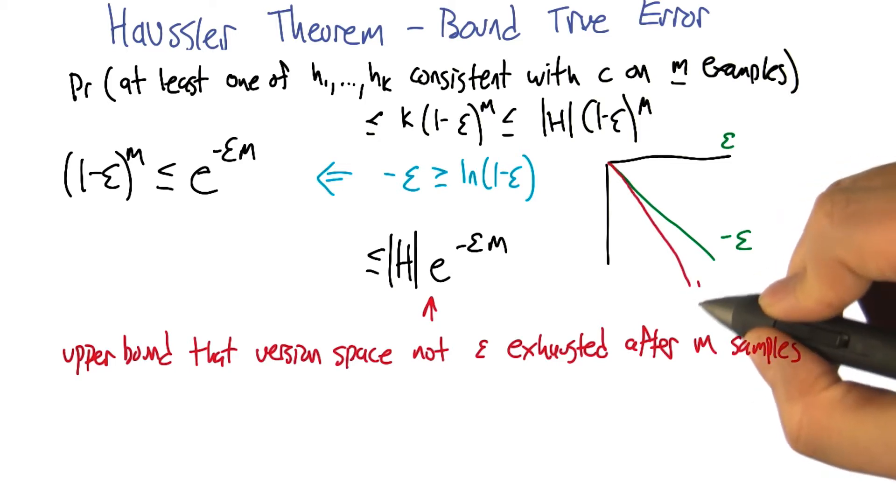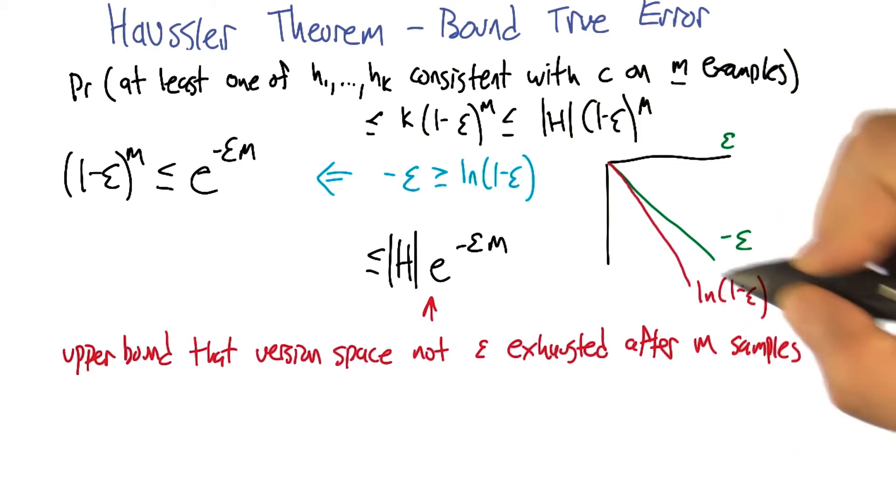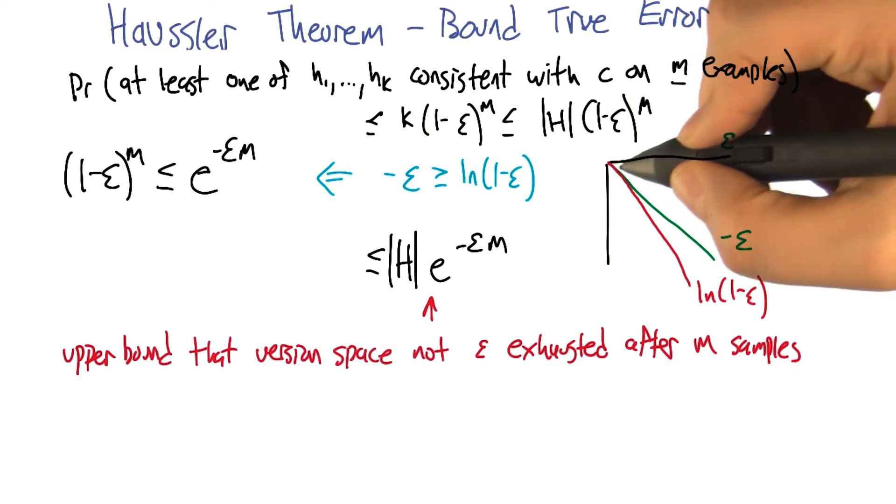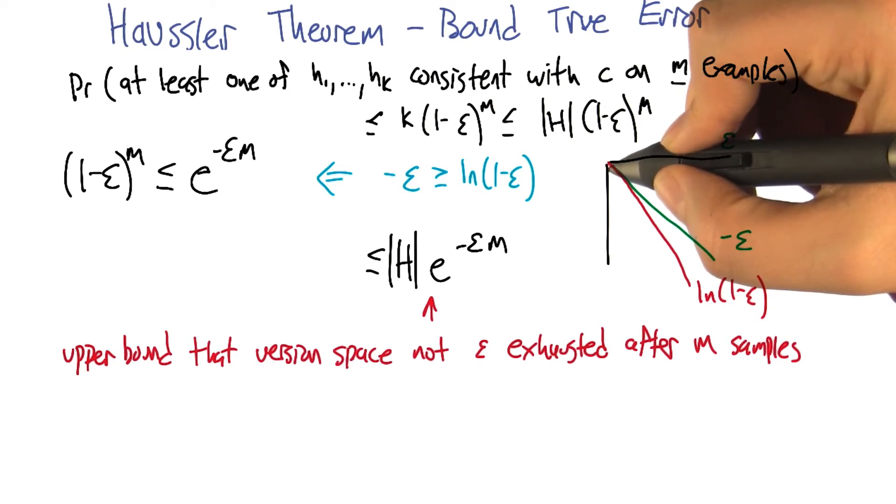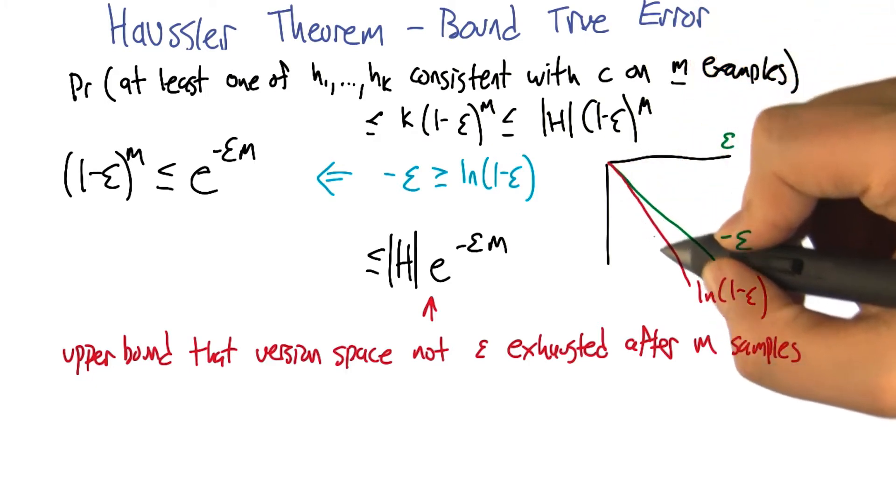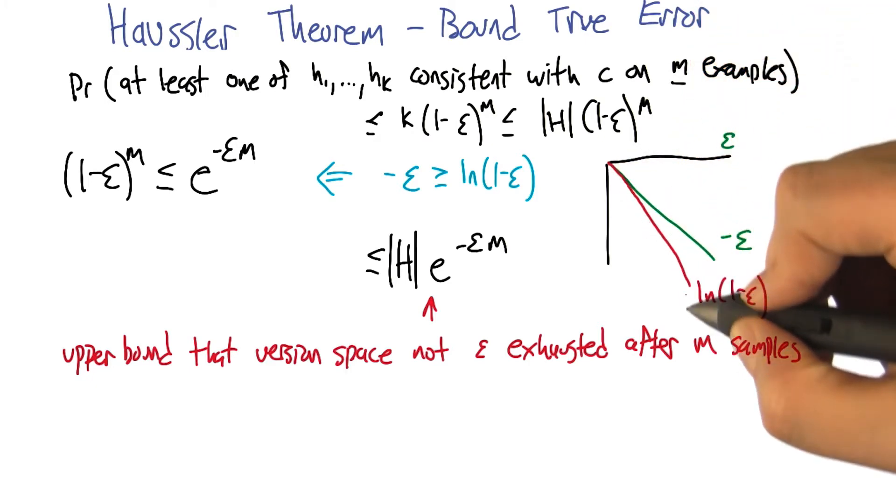And the log of 1 minus epsilon looks like this. It starts off, they're totally lined up at 0, at epsilon 0. Because 1 minus 0 is 1, the natural log of 1 is 0. Exactly.